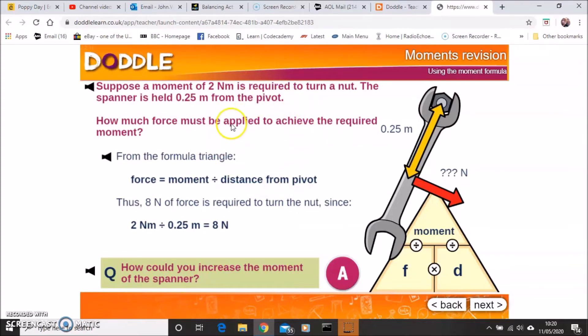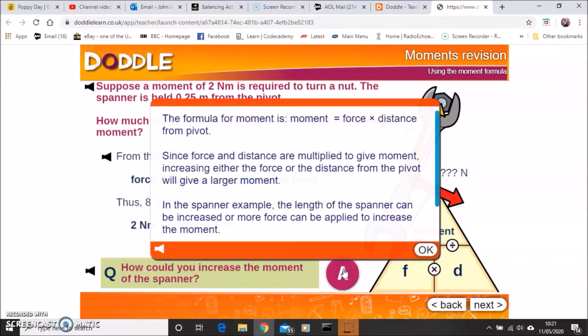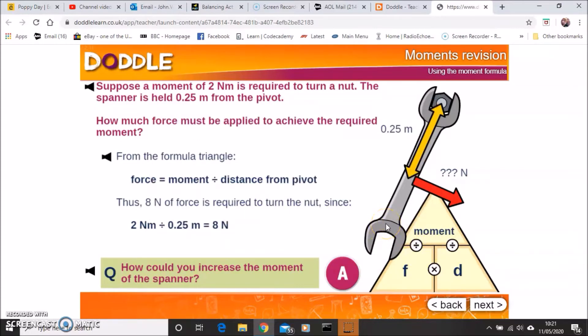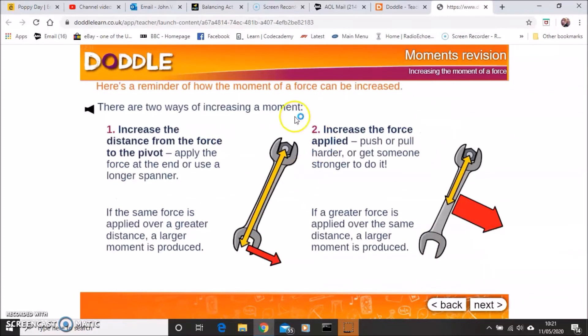If you understand that, you can then also think about how you would actually increase the turning force on that nut, because there's two ways that you can do that. One way, quite simply, is to use more force. You get somebody a bit stronger to apply the force to that nut. The other thing that you can do is you can actually hold that spanner or use a longer spanner so that the distance between the force and the pivot increases.